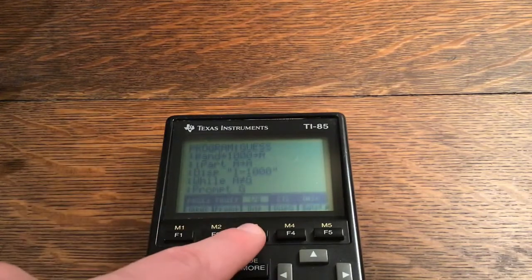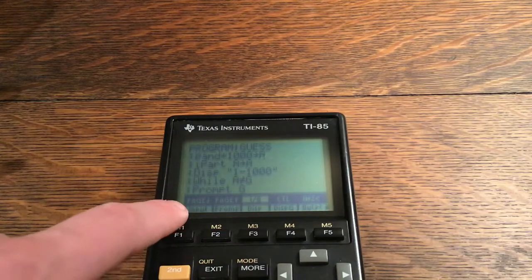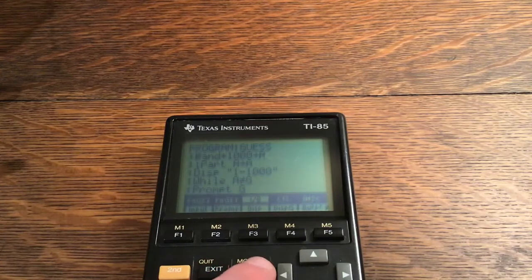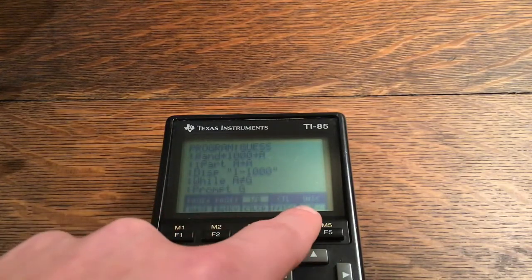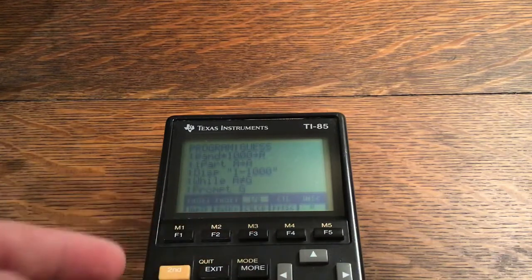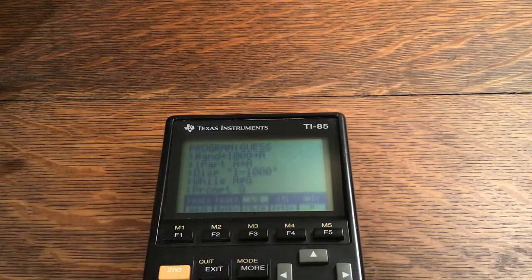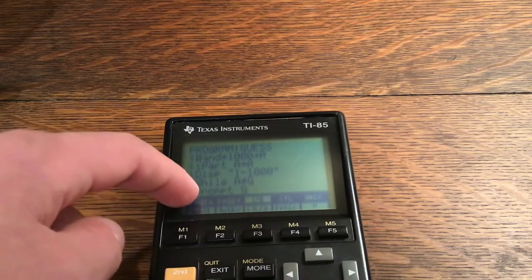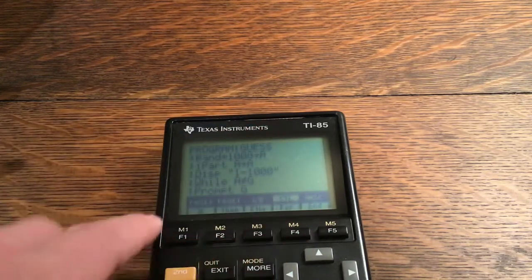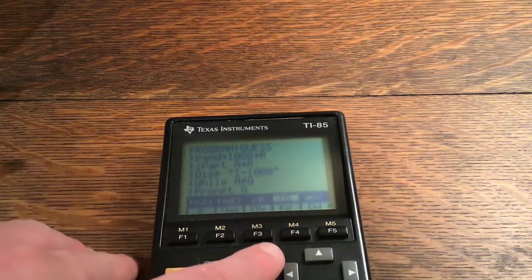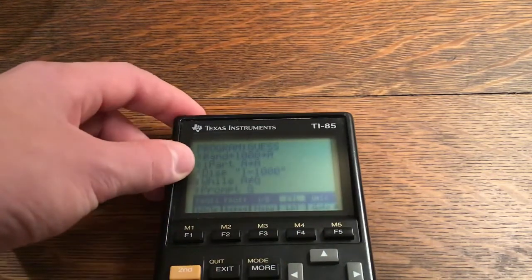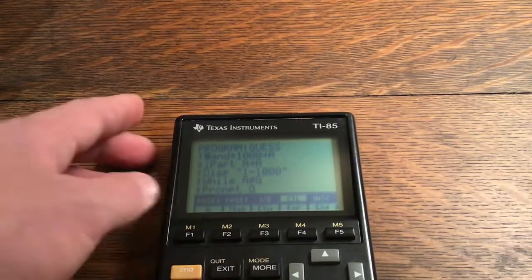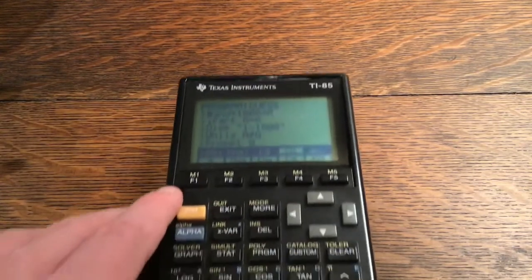Okay, so I'm going to click the I O button and now it gives me input, prompt, display, display G, output. So if I click the more button it will go to the rest of it. That's where you find the quote, by the way, and also clear home or clear LCD. And if you'd like to get to the control tab, now you click second and then F4, so it becomes M4. And then it gives you if, then, else, for, end, and more while, repeat, menu, label, go to, is, ds, pause, return, and stop.